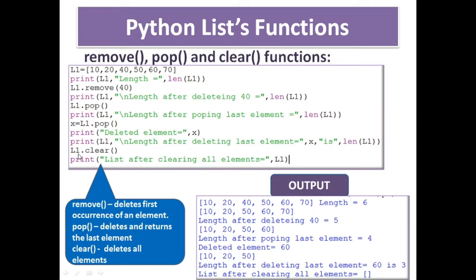One method is clear. L1.clear() will clear all the elements from the list — it will delete all elements. The list object will remain in memory associated with some memory cell reference, but all elements are deleted by clear. The list after clearing all elements is an empty list — just square brackets open and close — meaning all elements 10, 20, 50 have been deleted and an empty list is printed.